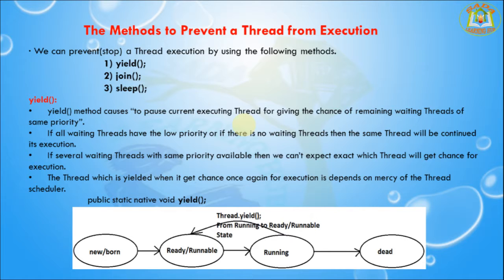The first method is yield. The yield method causes the current executing thread to pause, giving a chance to remaining waiting threads of the same priority. If all waiting threads have lower priority, or if there are no waiting threads, then the same thread will continue its execution. If several waiting threads of the same priority are available, we cannot predict which thread will get the chance of execution. The thread which is yielded will get a chance again depending upon the thread scheduler. The signature of the yield method is: public static native void yield.